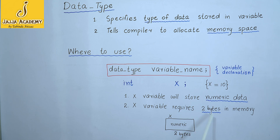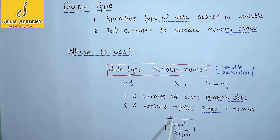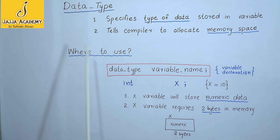In response to this declaration, two bytes of memory are allocated to the x variable inside memory. In this memory space, I can store numeric values only — it will not support data other than numeric data. That was the basic introduction of data type.